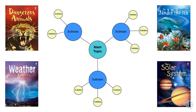Here's an example of a spidergram. Once you've chosen the theme that you're going to research, you will choose some topics within that theme that you'd like to find out a little bit more about, and you'll write down your ideas. As you go, you might find more information to add into your spidergram. It's just one way of organising your research.